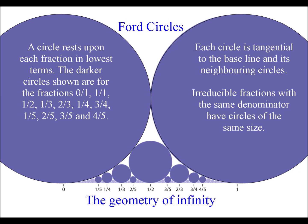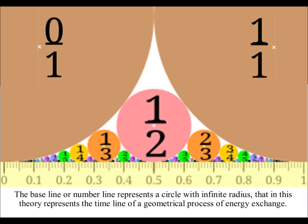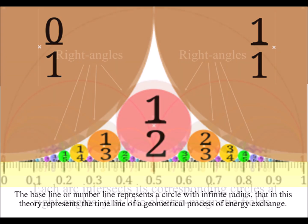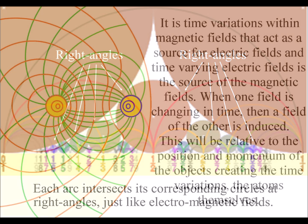Each Ford circle rests upon each fraction in its lowest form. The baseline or number line represents a circle with an infinite radius, that in this theory represents the timeline of a geometrical process of energy exchange. Note that each arc intersects its corresponding circle at right angles, just like electromagnetic fields.